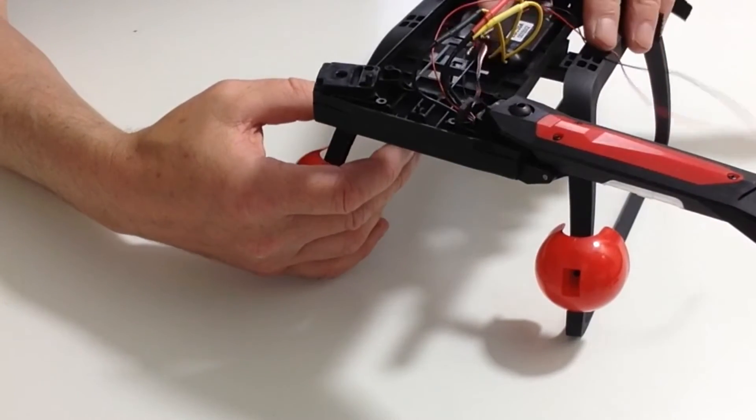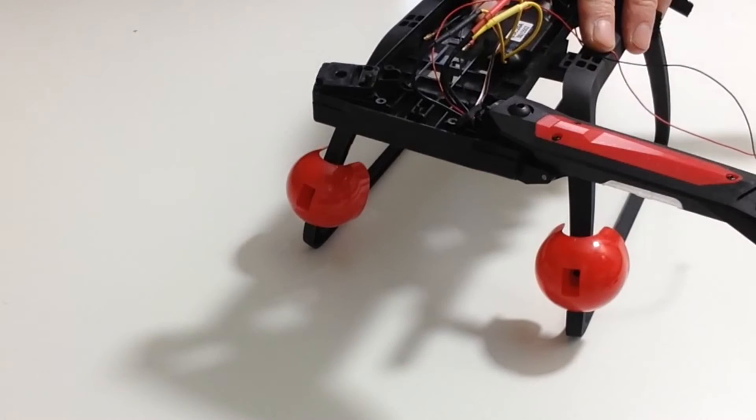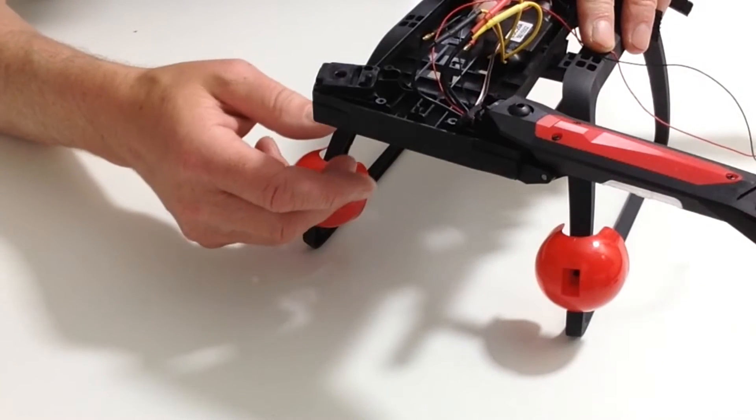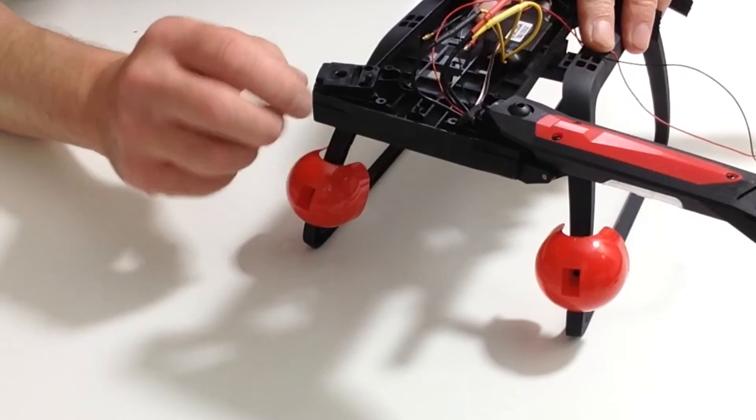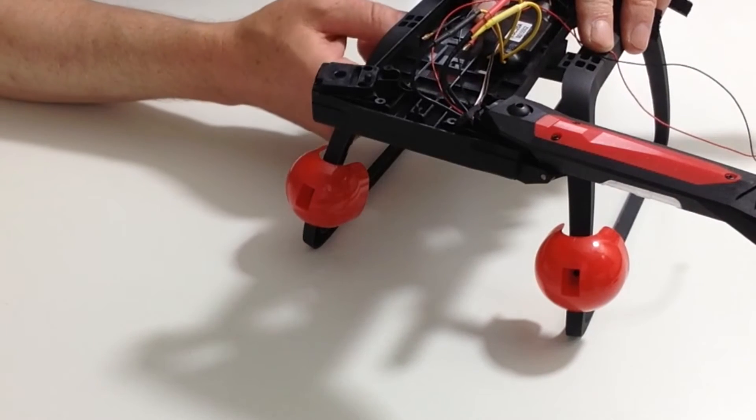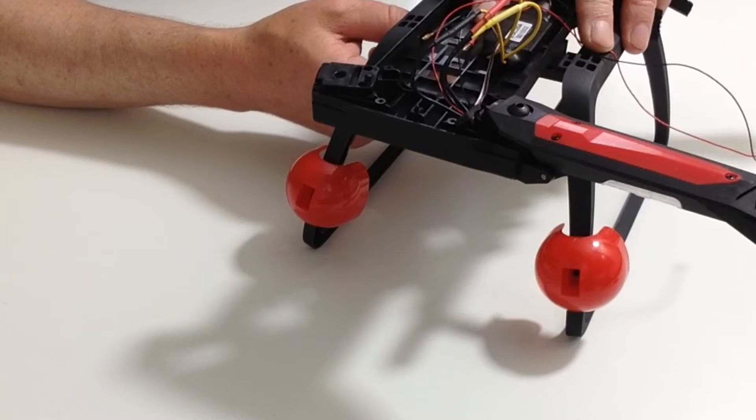Once you've done that, you then need to take two of the small grub screws and place those grub screws into the sides so that it holds the sidebar into position.